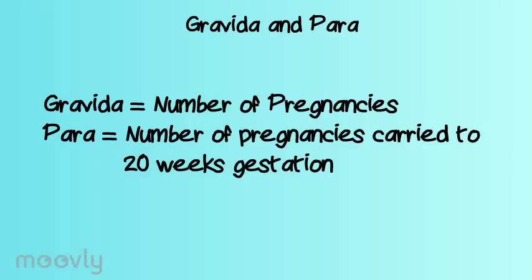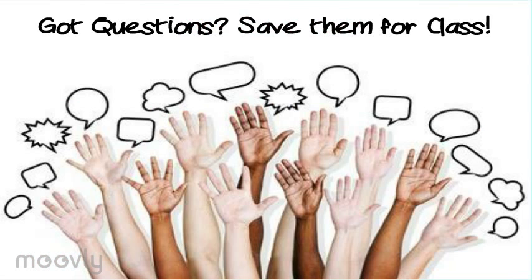Many people confuse the GTPAL system with the gravida and para system. While the P in the GTPAL system represents preterm births, the P in the gravida-para system stands for para — the number of pregnancies carried to at least 20 weeks gestation — which are two different concepts.